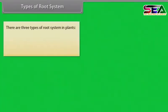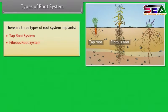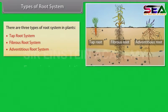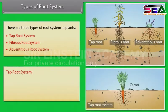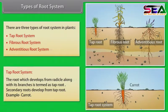Types of root system. There are three types of root system in plants: tap root system, fibrous root system, and adventitious root system. The root which develops from the radicle along with its branches is termed as tap root. Secondary roots develop from tap root. Example: carrot.